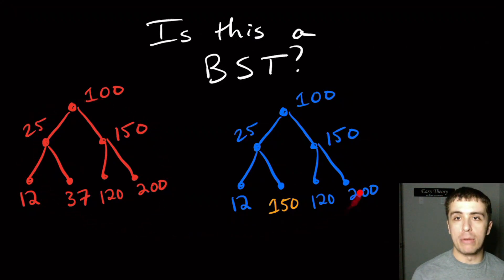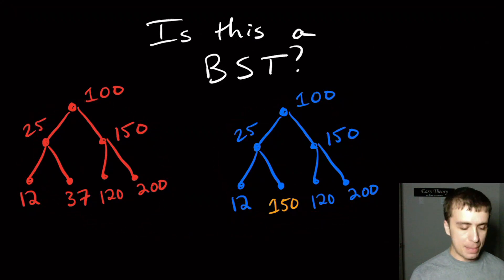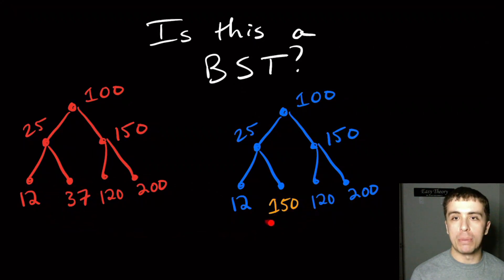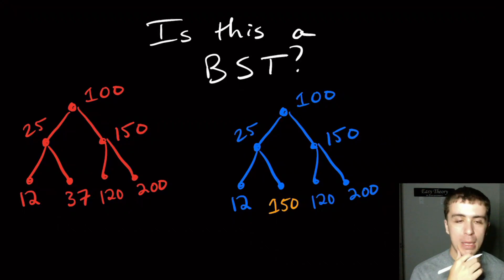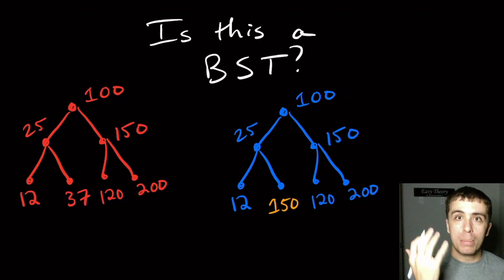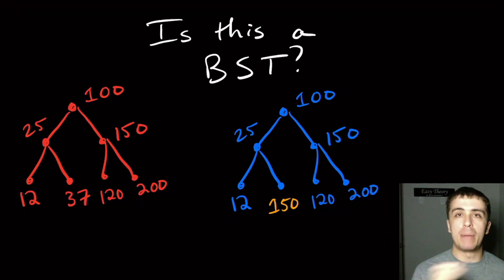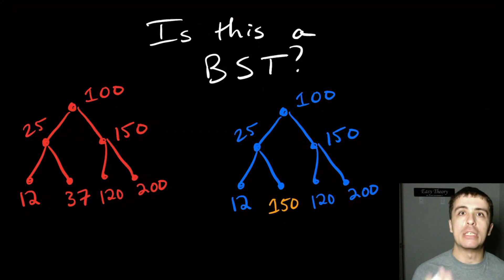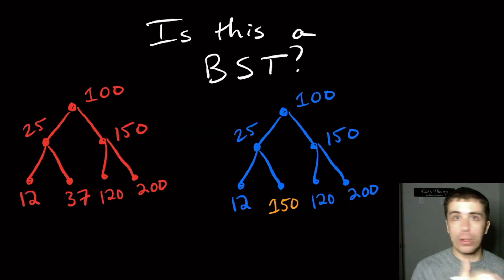I have two binary trees here — one in red and one in blue. They are exactly the same except this node 37 down here is replaced with 150 over here, otherwise they're exactly the same. Pause the video and try to figure out which of these binary trees is actually a binary search tree, and whether both or neither of them are.